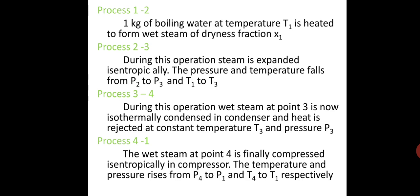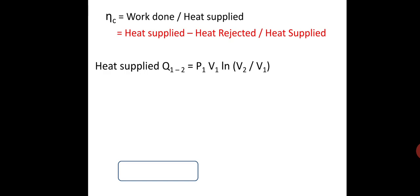Now, Carnot efficiency η equals work done by heat supplied, which equals heat supplied minus heat rejected divided by heat supplied. Heat supplied Q₁₋₂ equals P₁V₁ ln(V₂/V₁), which equals mRT₁ ln(γ). Heat rejected Q₃₋₄ equals P₃V₃ ln(V₃/V₄), which equals mRT₃ ln(γ).